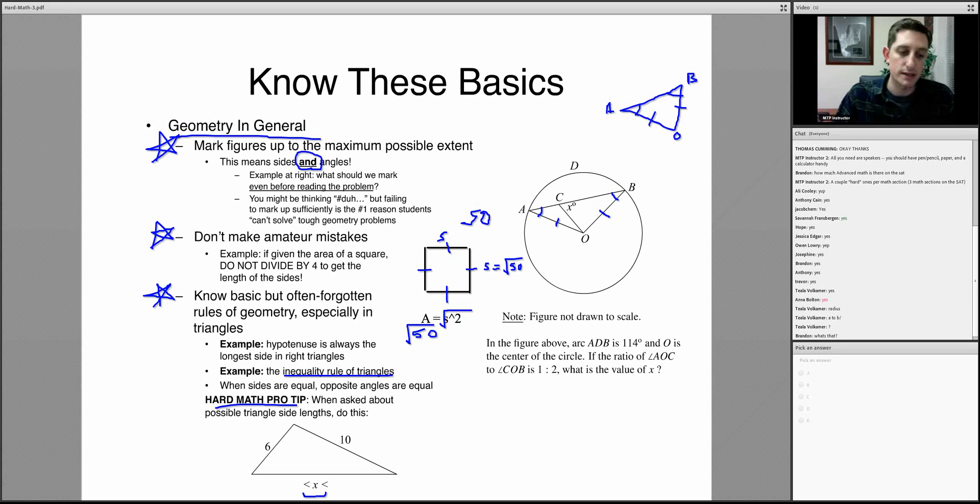You add the sides you have and put the sum over here: 16. You subtract them and put the difference over here: that's 4. You've now found the possible range of side lengths for your third side. It's got to be between 4 and 16; it cannot equal either of those numbers.